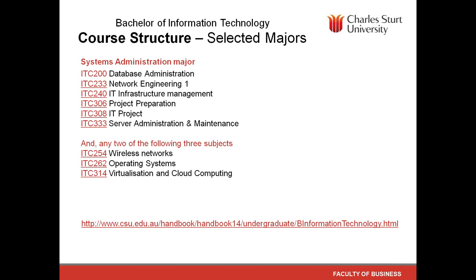A question from Stephen: with the Network Engineering major, are you able to pick the third subject under the six unrestricted electives? Yes, most certainly. You would choose any two of the three subjects listed there. If you wanted to choose all three, that would be fine — you just count one of those against your unrestricted electives.